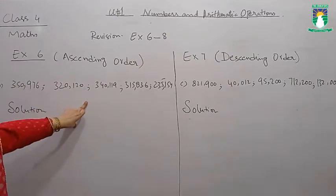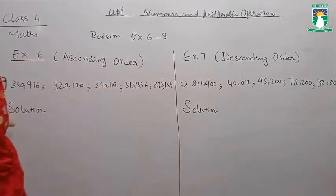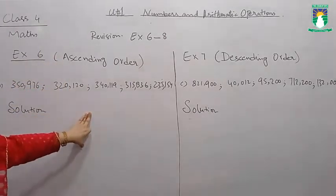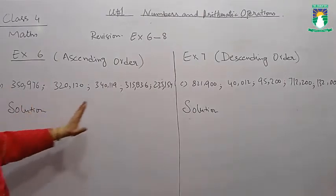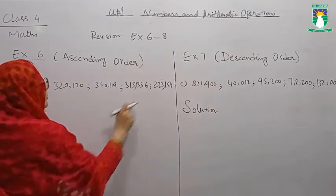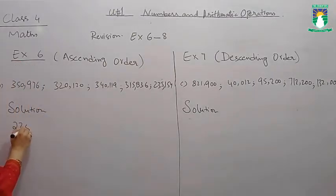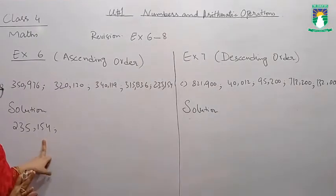First of all we are going to compare the houses. When we see the numbers carefully, we found that all the numbers that are present to arrange in ascending order have 22 houses. After confirming the number of houses, we are going to compare their highest house. When we compare the highest house, we come to know that 235 is the smallest digit, smallest house among these numbers. So 235,154 we are going to write first.